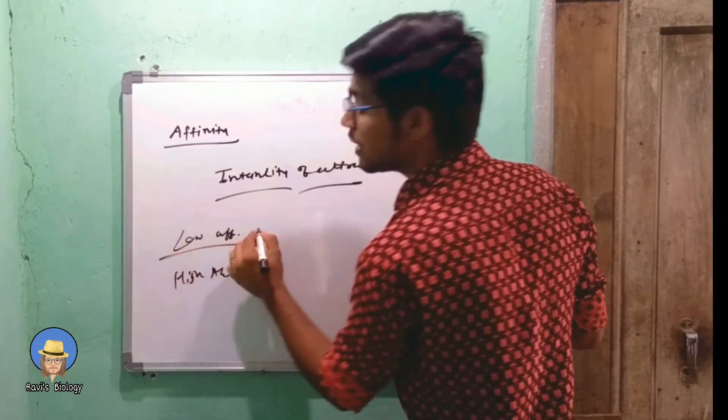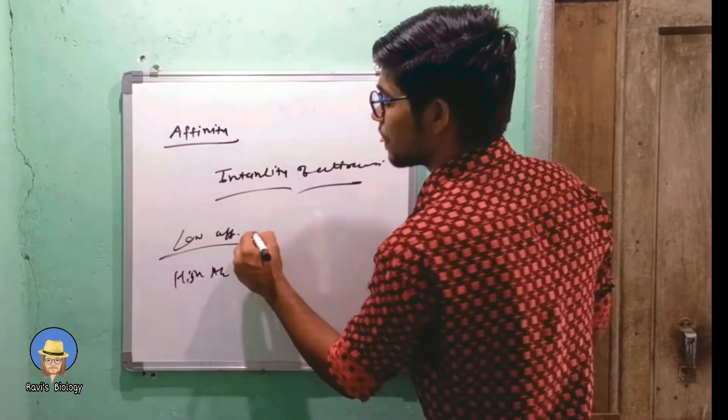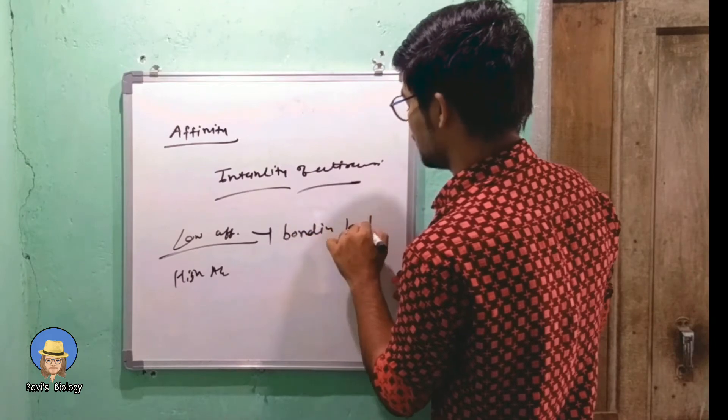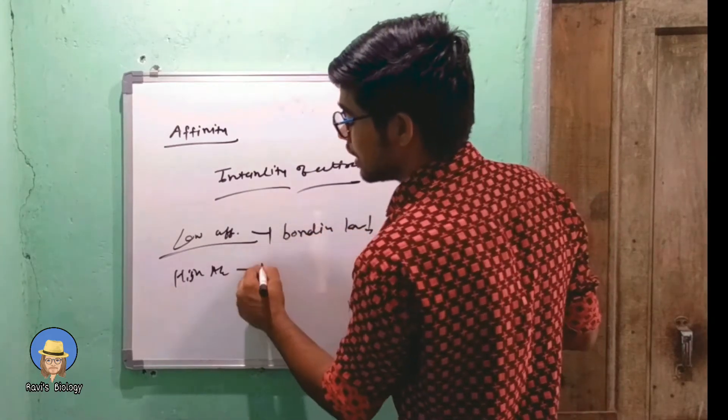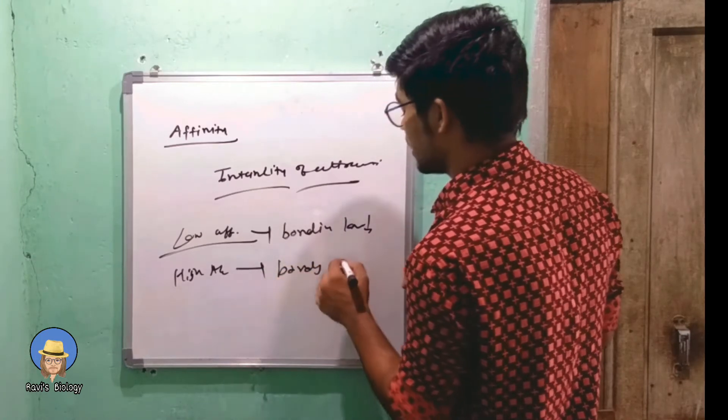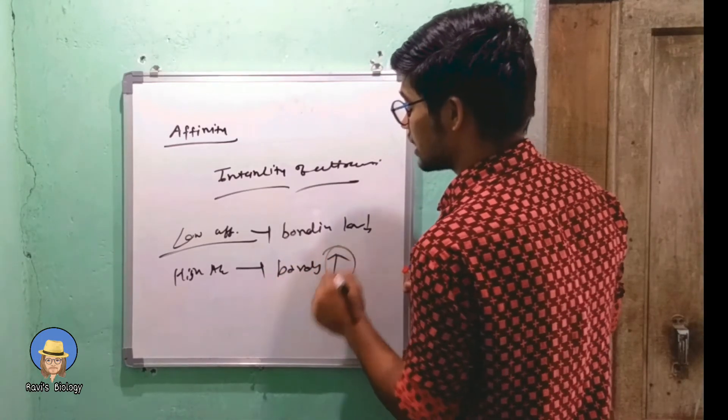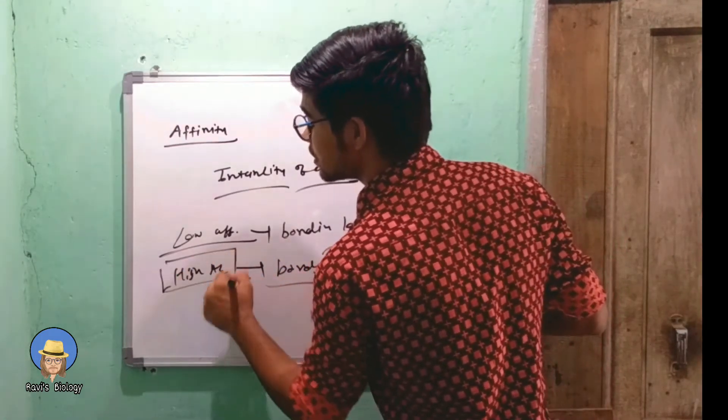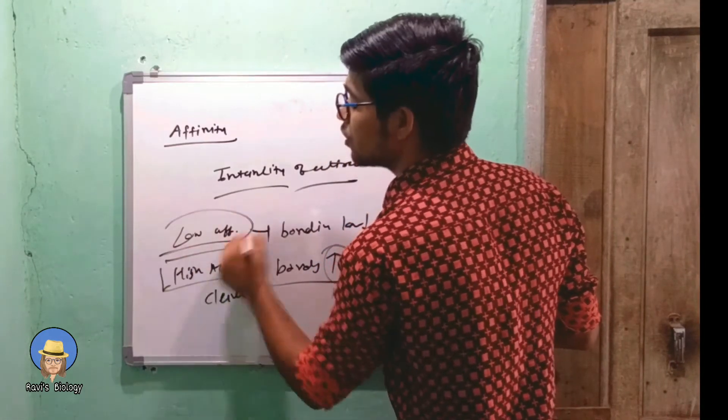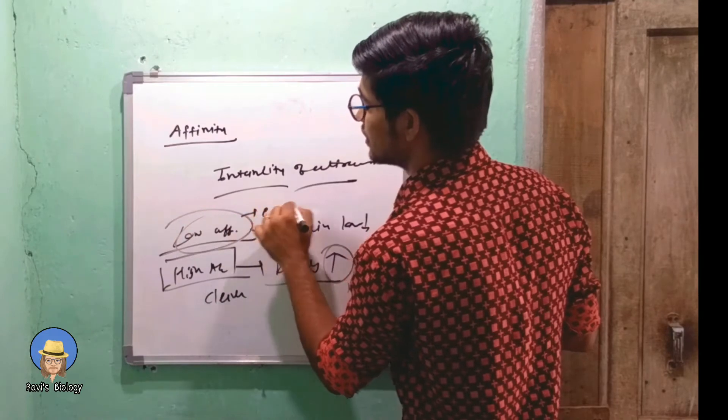In low affinity, the bonding is very low due to non-good fit, and in high affinity the bond is formed very strongly. High affinity is hard to cleave and low affinity easily dissociates.